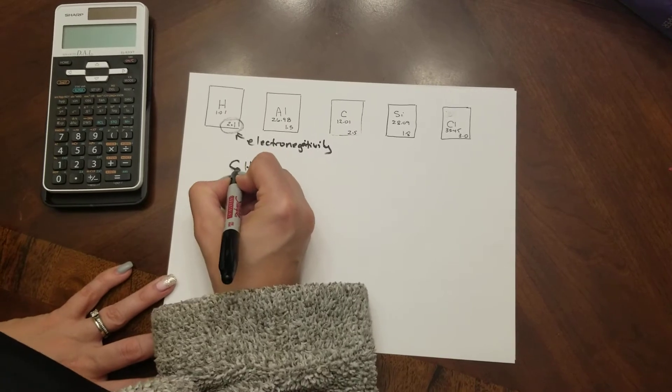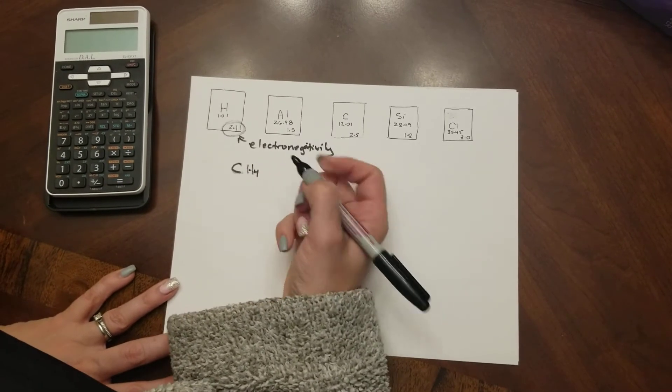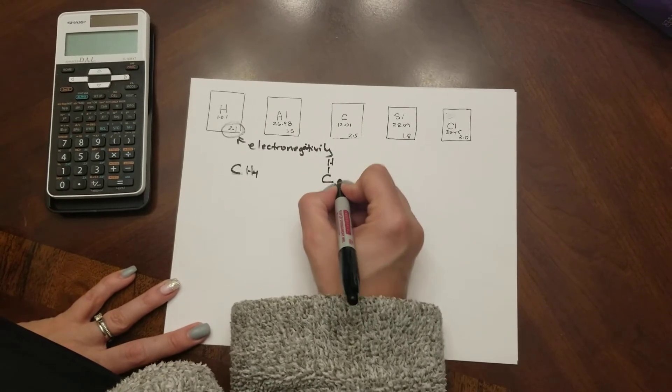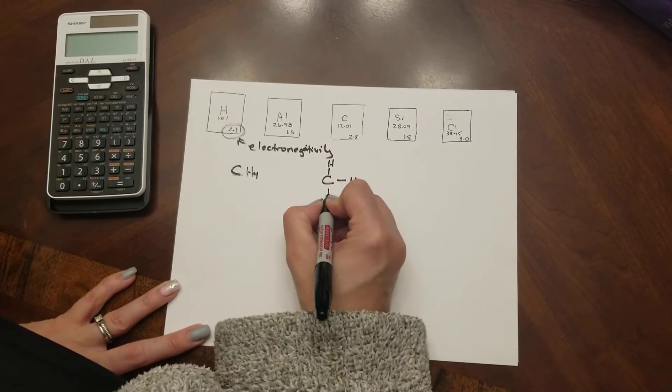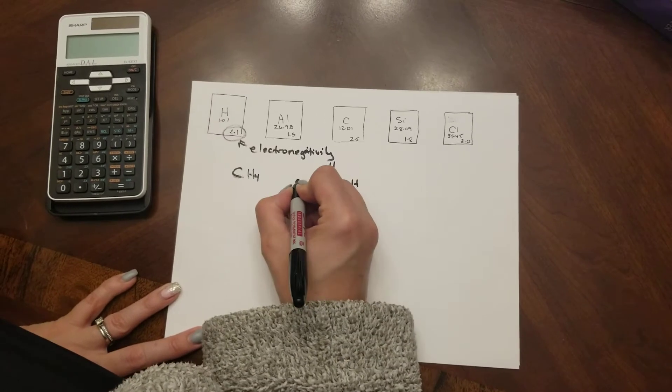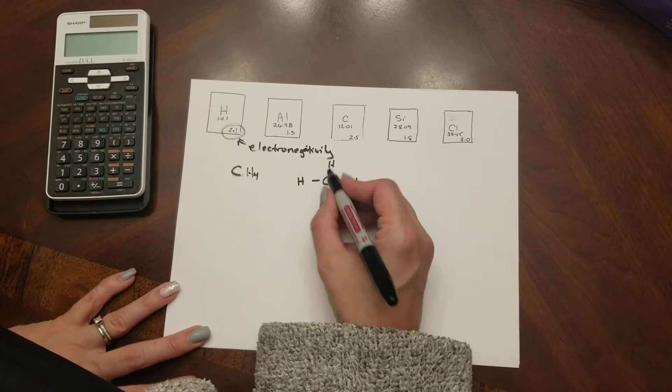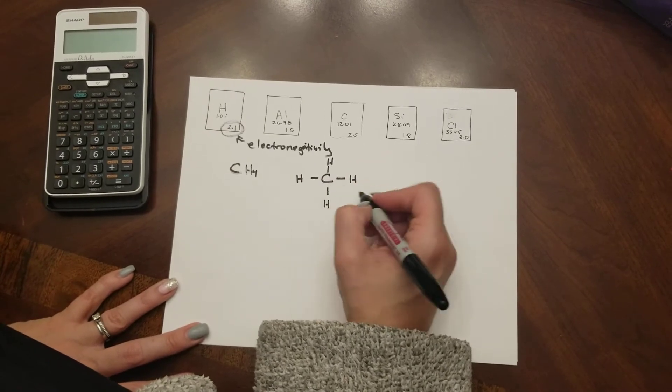We see that we have bonds between carbons and hydrogens so the methane molecule is shaped like this. We're going to spread the four hydrogens out around the carbon and we notice that there are four separate bonds between carbons and hydrogens.